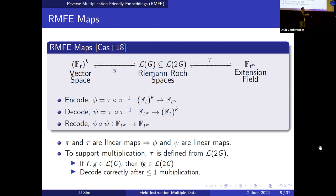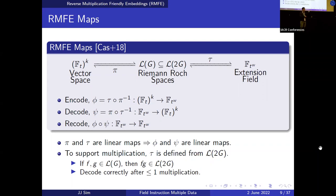We also have a recode function that maps from the extension field back to itself. This is because when we have two polynomials in L(G), their product exists in the higher-dimensional space L(2G). So after multiplication in the extension field, we map the result to L(2G). This means we can only support one multiplication, and after every multiplication we must do a recode that goes to the vector space and back to the extension field — similar in spirit to HE relinearization.